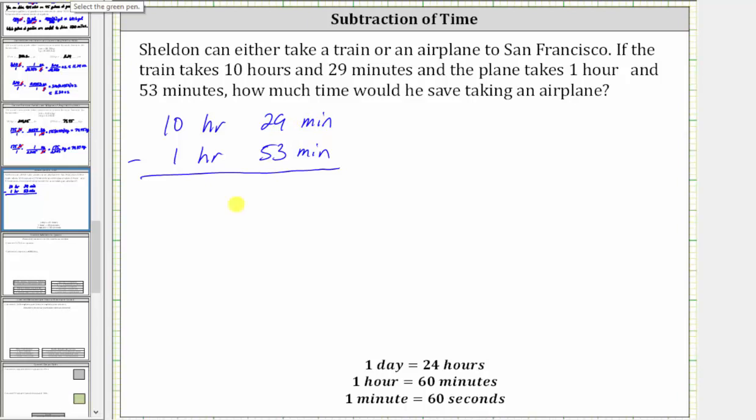So looking at this more closely, if we begin with 10 hours plus 29 minutes, we know 10 hours is equal to nine hours plus one hour. So we have nine hours plus one hour plus 29 minutes, and one hour is equal to 60 minutes, and therefore we can write this as nine hours plus 60 minutes plus 29 minutes, which gives us a total of nine hours plus 89 minutes.